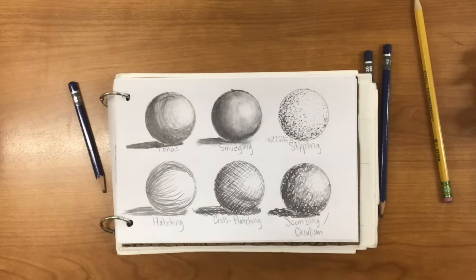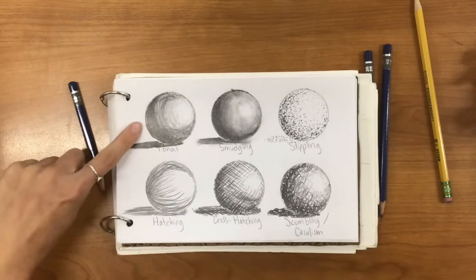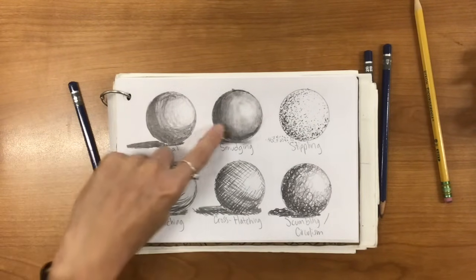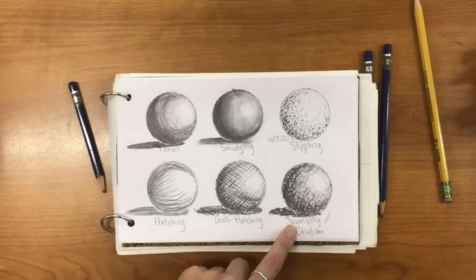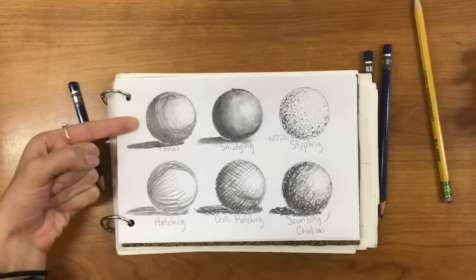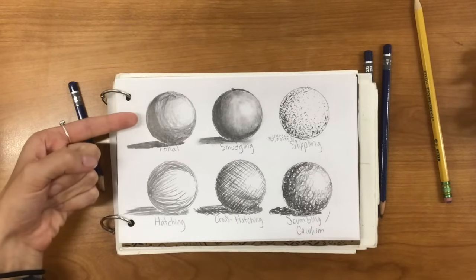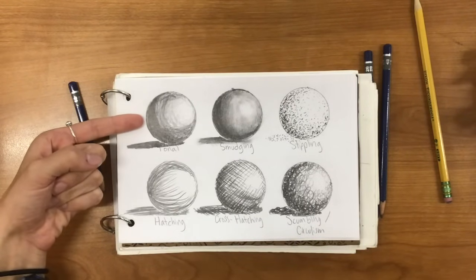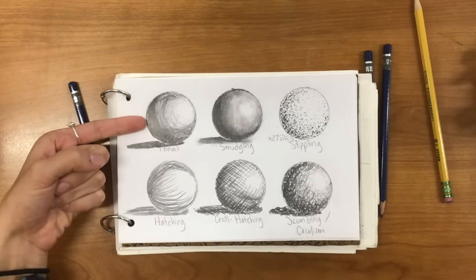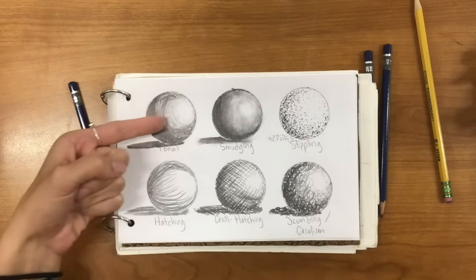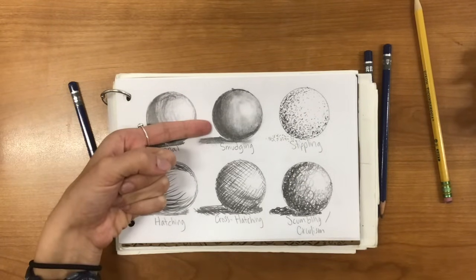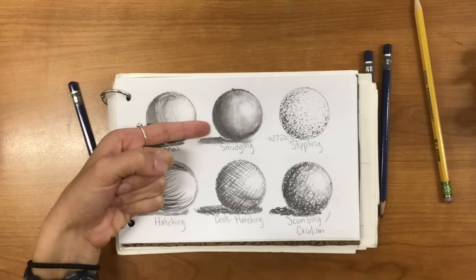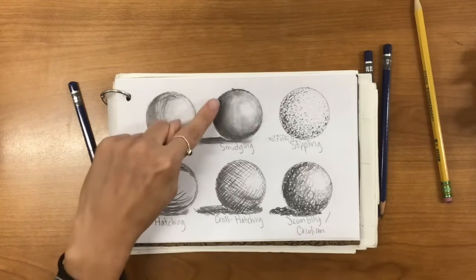All right, so those are our 6 shading techniques. You've got tonal, smudging, stippling, hatching, cross-hatching, and scumbling or circulism. Remember, the tonal, you're not going to shade with your finger at all. You're just relying on the layering of different types of pencils for the different types of values on your sphere. Smudging. You can smudge with your finger. You can smudge with a paper towel. You're really making a nice, soft, blended look.